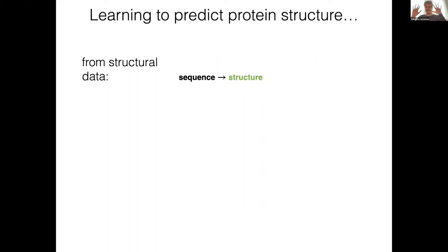Just to summarize at a very high level what's happening in the field now: there are new machine learning models that learn to predict structure from sequence or multiple sequence alignments. They typically train to some extent on structural data, so the PDB is a critical resource for all these models. The arrow here represents a neural network — a deep neural network that can be trained through back propagation of a loss function so that all the parameters inside that network get optimized.